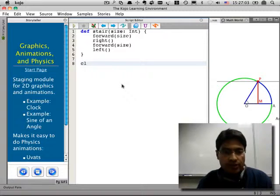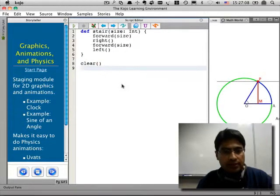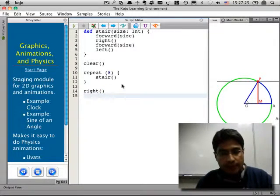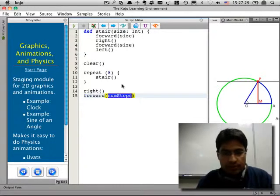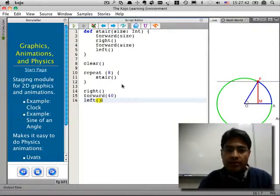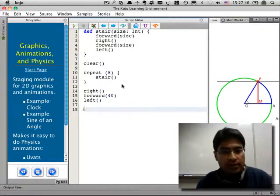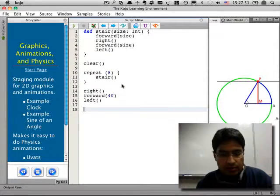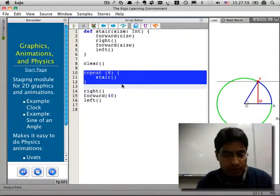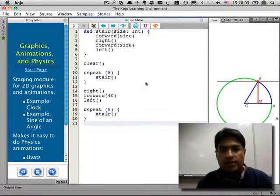Now let's use it. I'm going to say clear and then repeat eight times stair. And then I'm going to make a little landing here where I turn right and go forward by let's say 40 and then turn left. So I'm trying to build two flights of stairs with a landing in between. And here's my second flight. No, that's not what I wanted. Let's see. And let's try to run this program now.